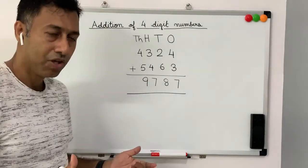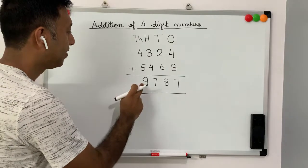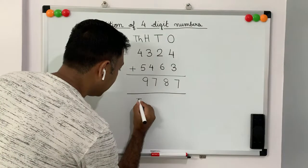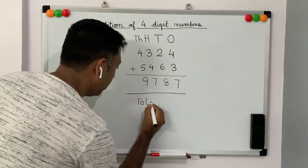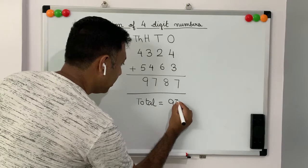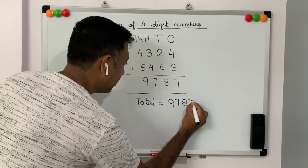That is it. So our result is 9, 7, 8, 7. You can write it like this. Total equal to 9, 7, 8, 7.